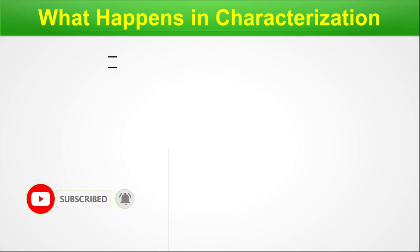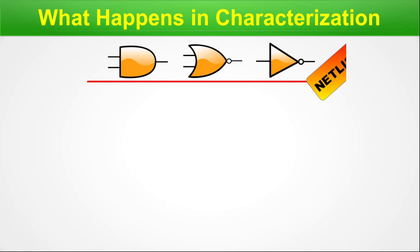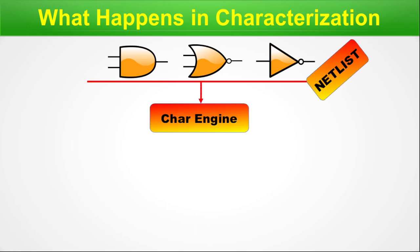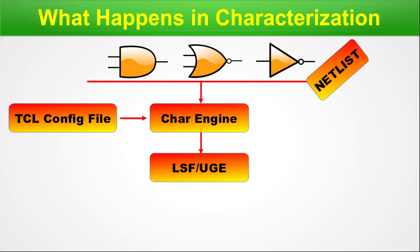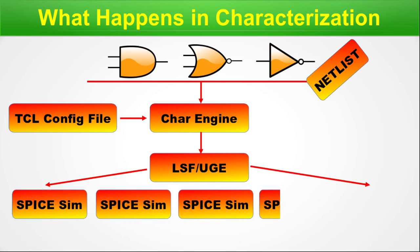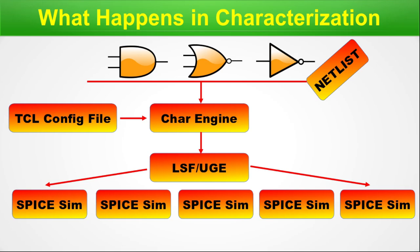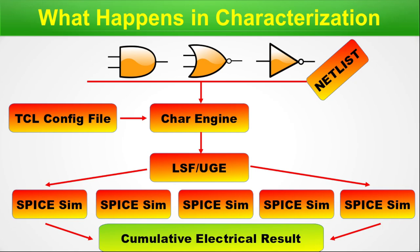What happens in characterization? The basic logic gates and their netlists are passed on to the characterization engine. Characterization engineers also provide a config file with various setups and types of runs. The engine connects with an LSF (load sharing facility) or Univa Grid Engine (UGE), and from there it launches multiple HSPICE simulations for various types of electrical characteristics, and all these come back as a cumulative electrical result.